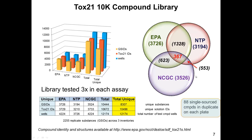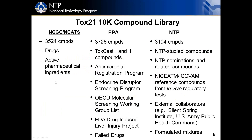Looking at the chemical subsets: NCATS and NCGC nominated quite a few drugs and active pharmaceutical ingredients. EPA had 3,700 chemicals comprising pesticides, antimicrobials, endocrine disruptors, chemicals from the OECD molecular screening working group, FDA drug-induced liver injury chemicals, and representative failed drugs from pharmaceutical research. NTP's roughly 3,200 chemicals included historically studied chemicals, chemicals nominated to NTP, reference chemicals, and chemicals from alternative in vitro approaches, external collaborators, and some mixtures.